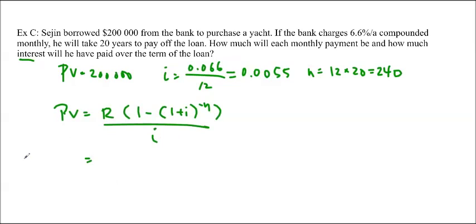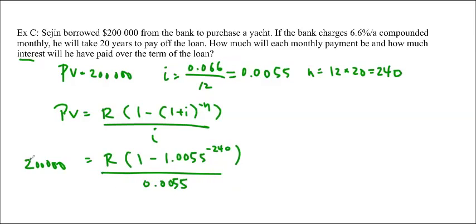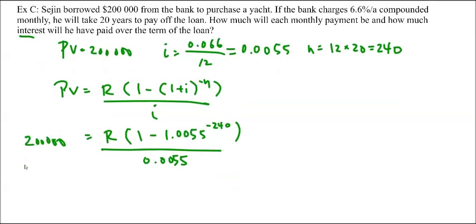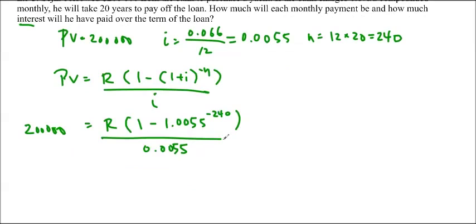Just fill this in. 200,000 is equal to R times 1 minus 1.0055 to the negative 240 over 0.0055. So we'll multiply 200,000 by 0.0055, and then divide by this number. We get R is equal to $1,502.94.